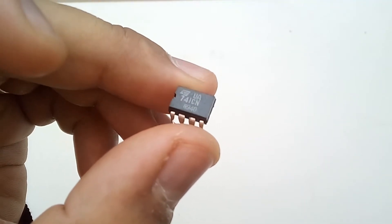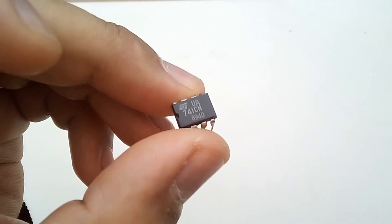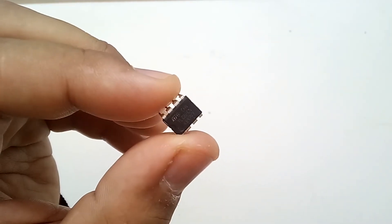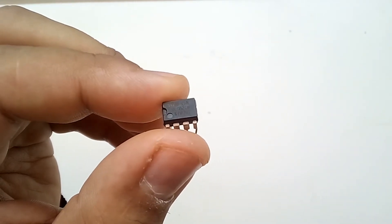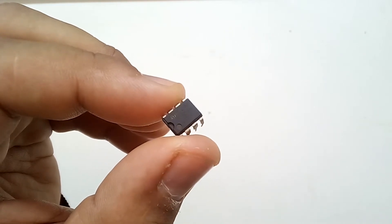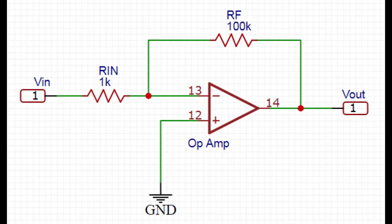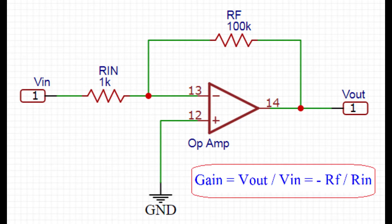An operational amplifier, often called op amp, is a DC coupled high gain electronic voltage amplifier with a differential input and usually a single-ended output. In our project we will use the op amp in the inverting configuration as shown in the schematic. Its gain is given by this formula.